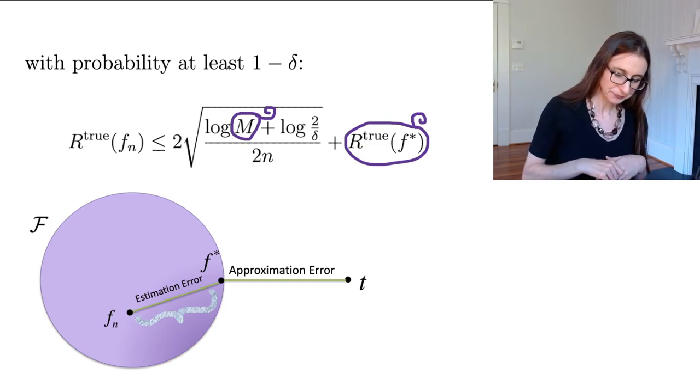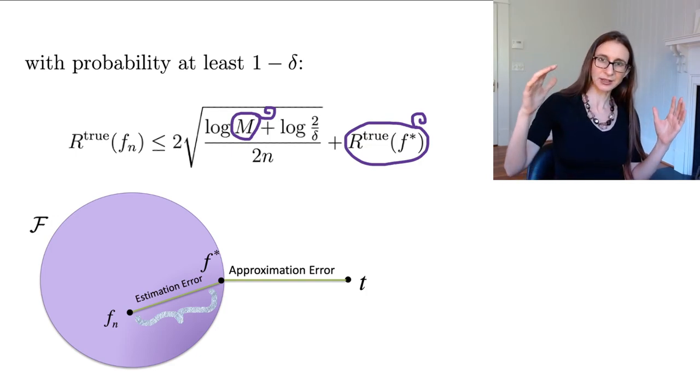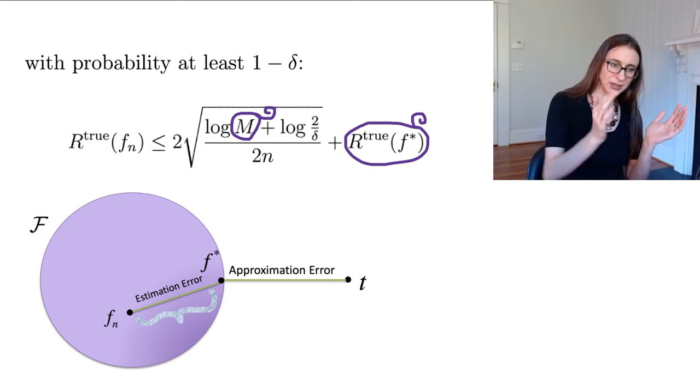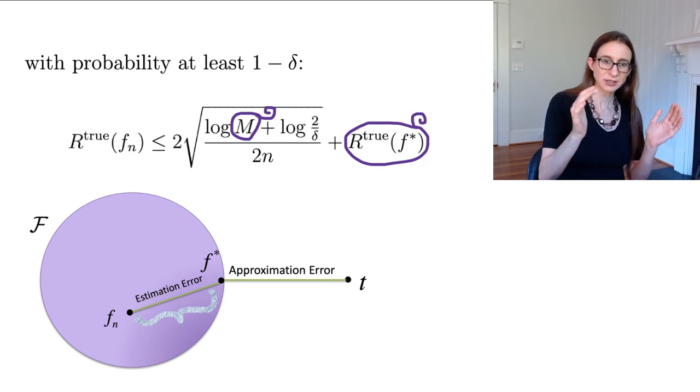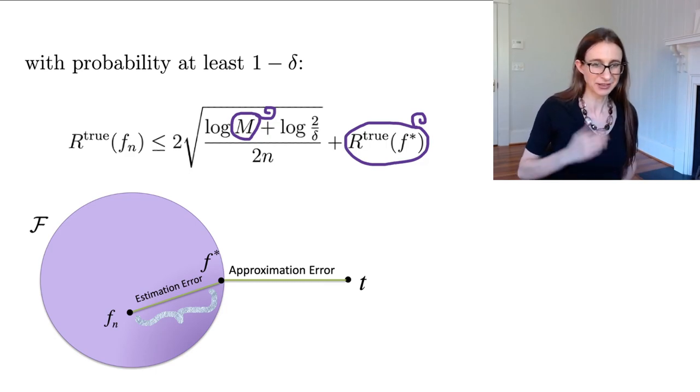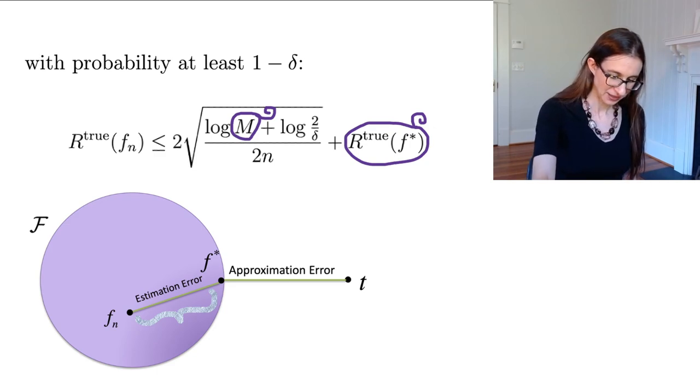But then if you make the function space smaller, then the true risk of f star gets worse, but that log M term gets better. So that's how it works. These terms kind of work against each other, which is kind of cool.